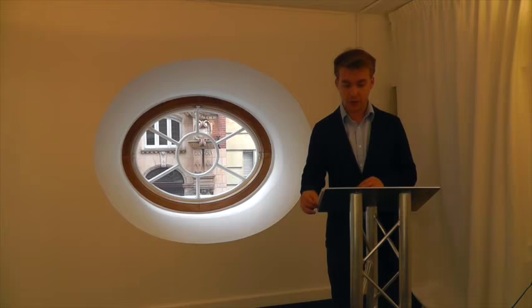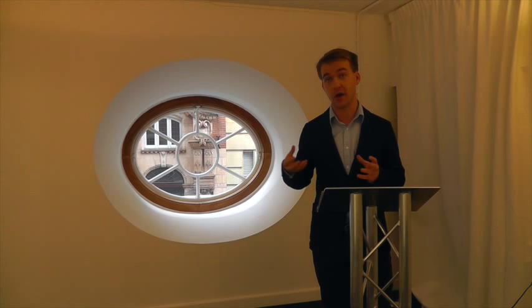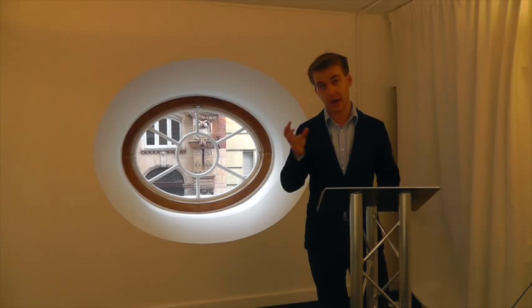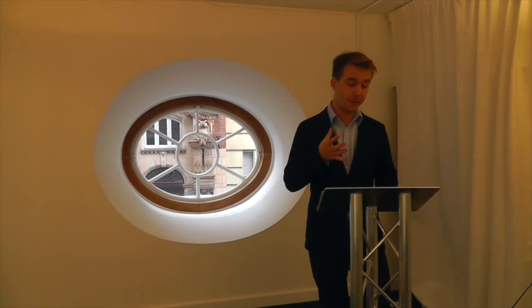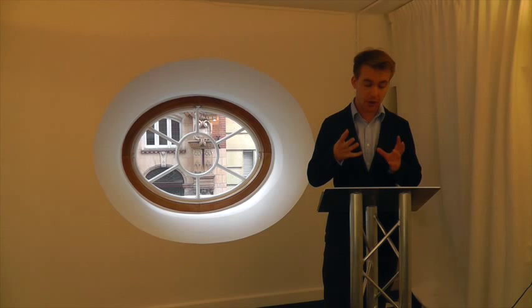Everybody knows the arguments about crime and immigration, and that is a problem actually mostly because immigrants are young and young people commit crime. We have evidence from the UK from two waves of immigration: one from asylum seekers in the late 1990s and early 2000s, and one from Eastern Europeans from 2004 on. In neither case was there an uptick in violent crime. However, asylum seekers were associated with an increase in property crime. The authors hypothesise this is because asylum seekers are generally banned from working for at least a year after arrival. Where there is a spike in crime, it seems to be because immigrants are younger, not because immigrants are more prone to crime for any other reason.